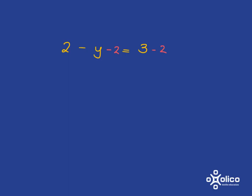Here, we're going to have 2, subtract y, subtract 2. Well, the 2 subtract 2 gives us nothing. So we're going to be left with negative y is equal to 1.